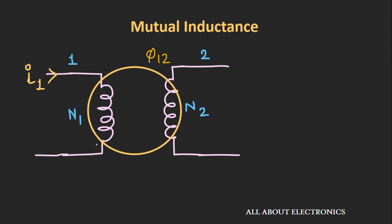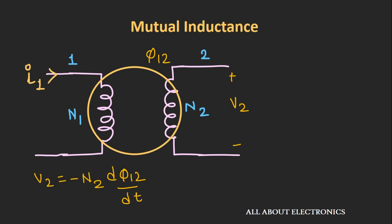The current flowing through coil 1 is time varying, so the flux linked with coil 2 will also be time varying. This time-varying magnetic field generates a voltage V2 in coil 2. According to Faraday's law, we can write V2 = -N2 × dφ12/dt, where N2 is the number of turns in coil 2. Let's call this equation number 3.